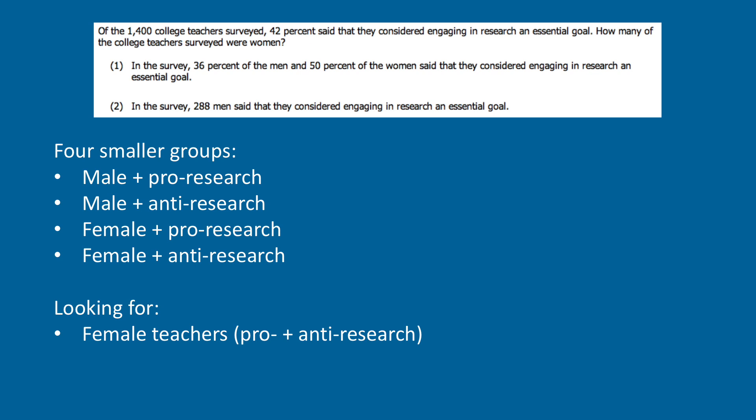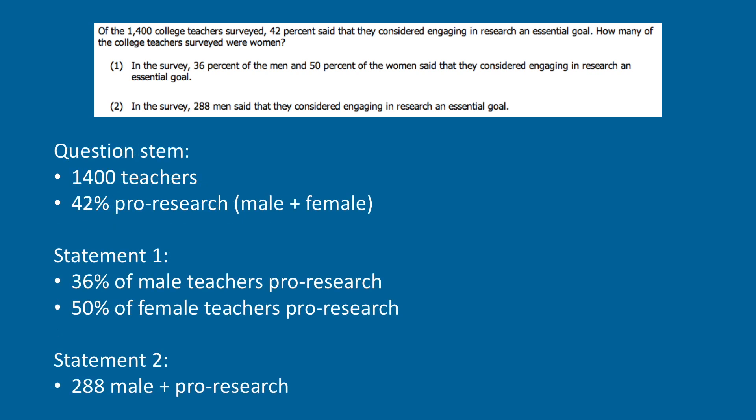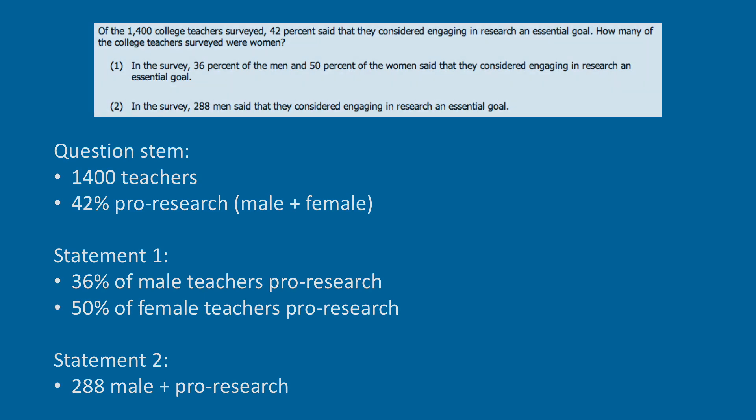We want to find the number of teachers who are women — that's both female teachers who are pro-research and female teachers who are anti-research. The question stem tells us there are 1,400 teachers in total, and that 42% of these teachers, both men and women, are pro-research.